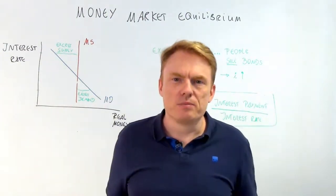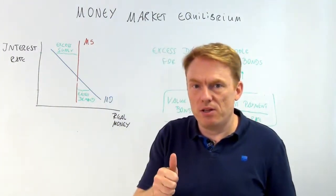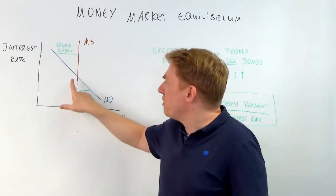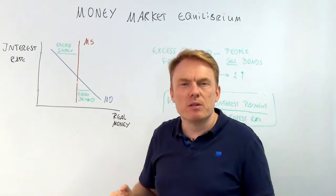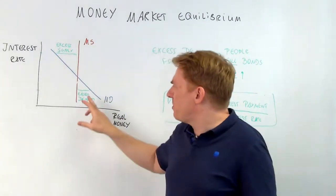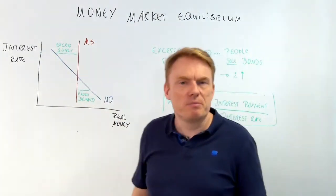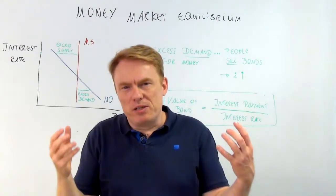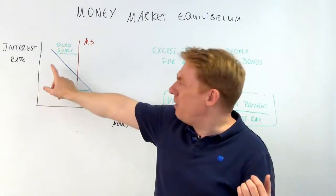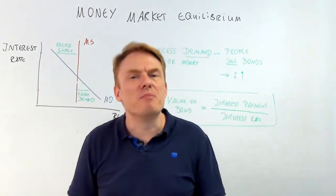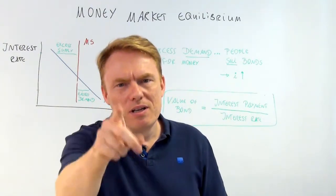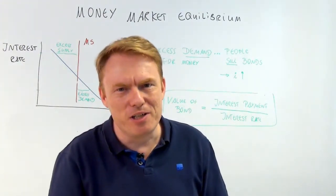What did we learn in this video? We've been talking about the demand for money, the supply of money, and the equilibrium interest rate. We've been talking about what happens with excess demand and excess supply of money: the interest rate goes up with excess demand and goes down with excess supply. Very important to understand and to know. Until next video, thank you.